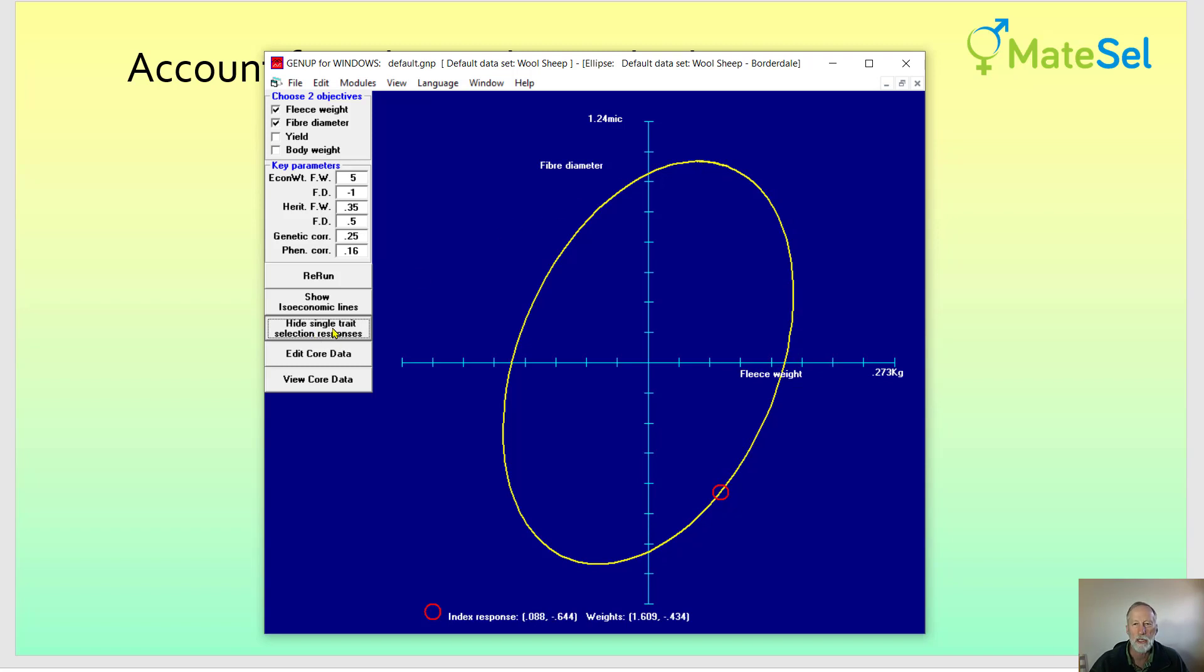So if we look at the single trait selection responses, if we selected only for fibre diameter we would end up here with a positive correlated response in fleece weight because of the positive correlation between them. But this is indeed a frontier that you cannot leave just by having a certain amount of emphasis on each you will be somewhere on this frontier.